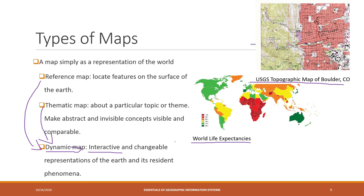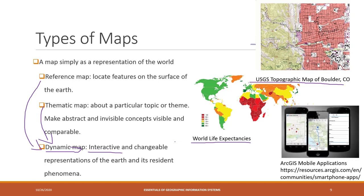Dynamic maps are like online maps — for example, we can now view maps on different mobile devices. In most cases, those dynamic maps can be used to find out the best route. We can also zoom in and zoom out and make some queries. It's a kind of new format of maps, and we will learn how to create those dynamic maps in the following weeks.